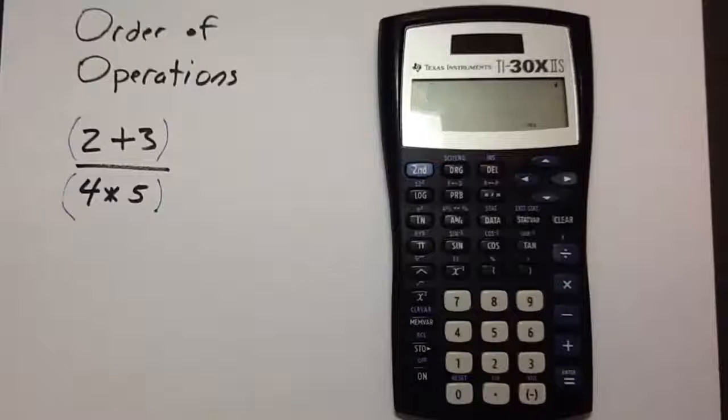I'm going to start today with the TI-30X2S. And our problem is going to be to find the value of 2 plus 3 over 4 times 5. Now, for this particular calculator, the TI-30X2S, I recommend that you place parentheses around the numerator and around the denominator. I've put them in blue. They may not always give you those parentheses, but for this calculator, it's a good idea to enter them that way.